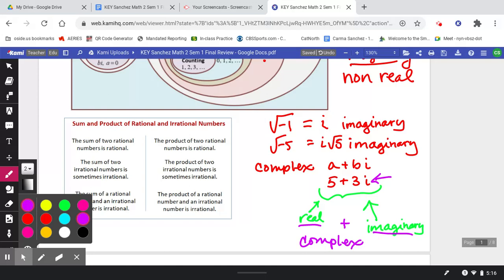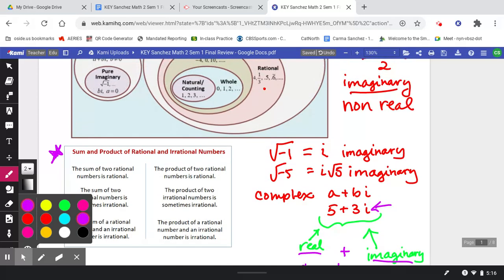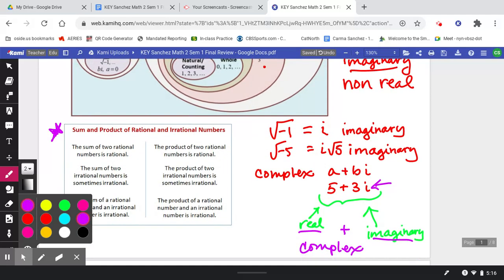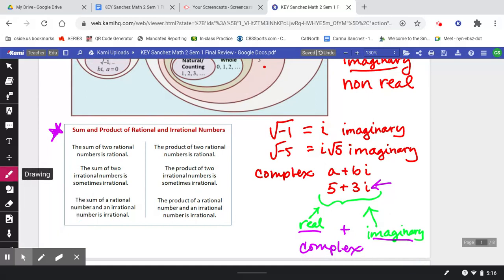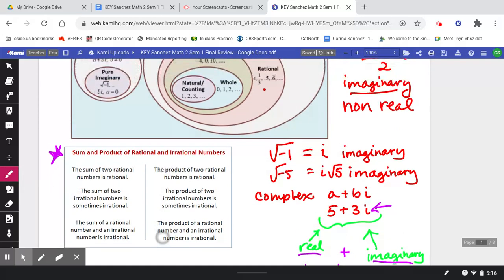Now, finally, I want to bring your attention over here to this quick logic table. Sum and product of rational and irrational numbers. These are properties of rational and irrational numbers that we need to remember, and these could come up on your final. So the sum of two rational numbers is rational.